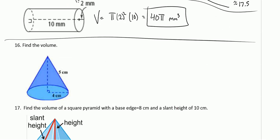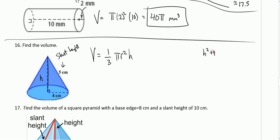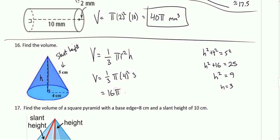Number 16, we have a cone. The volume of a cone is one-third pi r squared times the height h. Be careful: 5 is not your height — 5 is the slant height. The height of the cone must be perpendicular to the base, forming a right triangle. Using the Pythagorean theorem: h squared plus 4 squared equals 5 squared, which you may recognize as a 3-4-5 right triangle. The height is 3. So the volume is one-third pi times 4 squared times 3, which is 16 pi cubic centimeters.